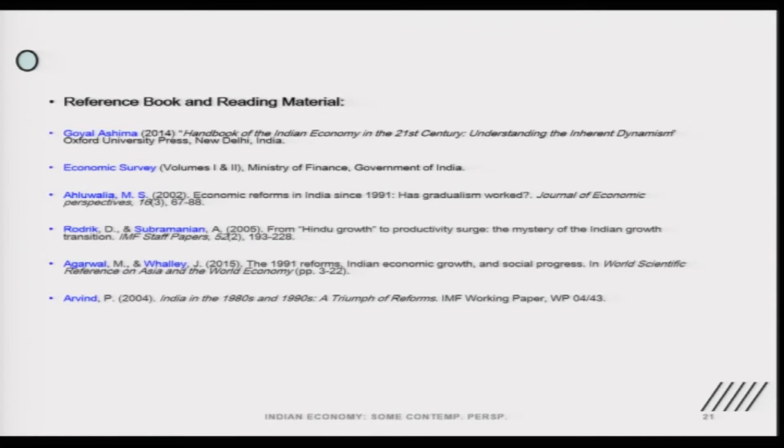In lecture 3, we will develop a different understanding about the 6th and 7th Plans and beyond. We will also discuss what we study in textbooks about the 1991 balance of payments crisis in India — what it was about, and what were the detailed reasons for that 1991 debacle. These are the main learning objectives. Readings remain the same as mentioned in the last two lectures — papers from the Economic Survey, Ahluwalia, Roderick Subramaniam, Agrawal, Wale, and Arvind, all of whom have contributed to India's economic history.